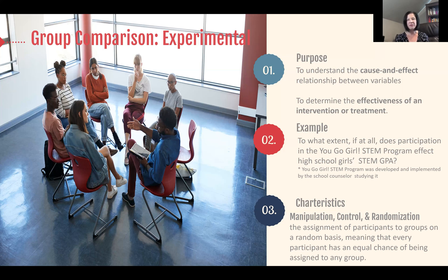A simple way to think about random assignment: let's say the researcher wants to study the UGO Girls STEM group, and there are 100 girls at the school. The researcher puts all 100 girls' names in a hat and pulls names out one at a time. The first name pulled goes to the treatment group, the second goes to the control group. That's the idea of randomization.